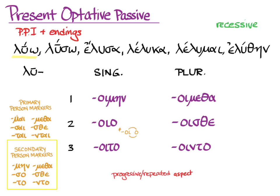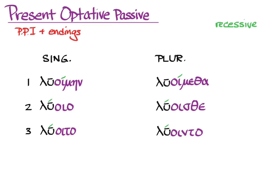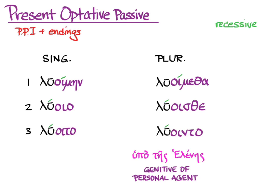Let's see what luo looks like in the present optative passive: luoimein, luoia, luoita, luoimetha, luoista, and luointah. And you use the genitive of agent if you need it.